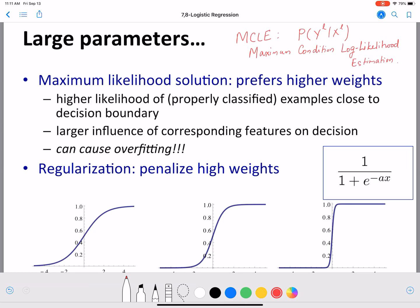Remember, we are learning the weights, which are also the parameters of the logit function, and it generally prefers higher weights. Having higher weights could have a larger influence of the corresponding features on decision.